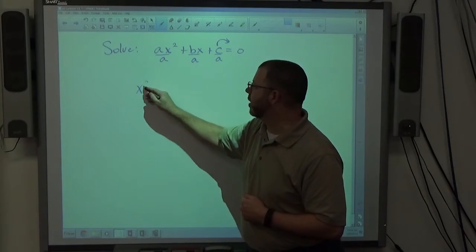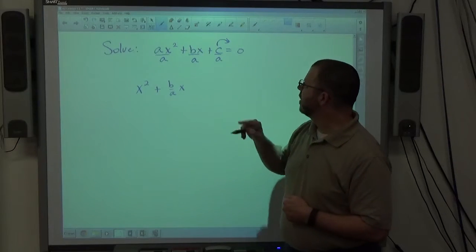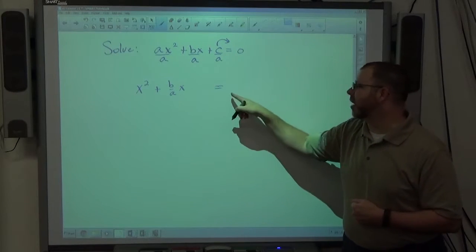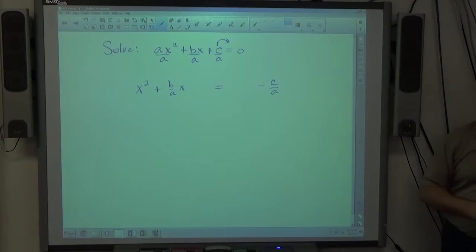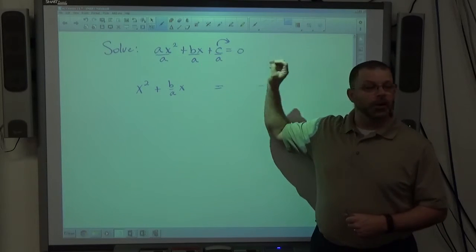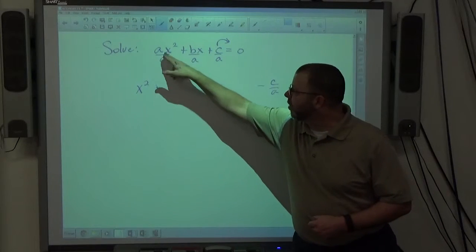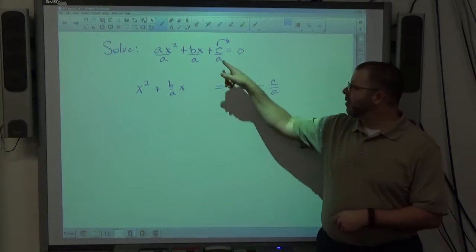If I start off my very first step, divide everything by a and move c over a to the other side, the end result is ax squared over a just becomes x squared, plus b over ax. I can't reduce b over a because I don't know what either b or a is. And I'm moving c over a to the other side. I'm leaving a gap. I not only move c over a to the other side, I'm also going to gap right here. Putting a gap there is probably a good thing to do. It makes the expression a little bit nicer to look at.